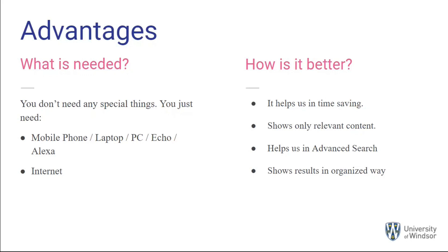It filters out irrelevant and unnecessary documents and helps in advanced search. For example, if a user wants to search only for PDFs, they can write 'filetype:pdf' and will only be shown PDFs. The web search engine also displays all information in an organized way, making it easy for the user to search and scroll through content.